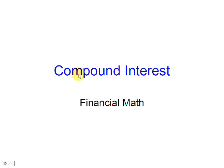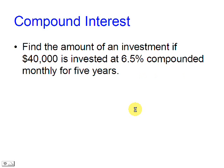I'm going to show you how to calculate compound interest — it has to do with financial math. In this problem we are asked to find the amount of an investment if $40,000 are invested at 6.5% compounded monthly for 5 years.